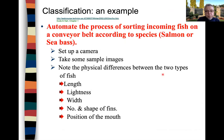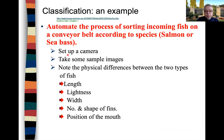We would like to look at an example to see how we can automate the process of classification — in this case, sorting incoming fish on a conveyor belt according to their species: whether it's a salmon or a sea bass. We set up a camera, take some sample images, and identify the physical differences between the two types of fish, such as the length, the lightness, the width, the number and shape of the fins, and the position of the mouth.